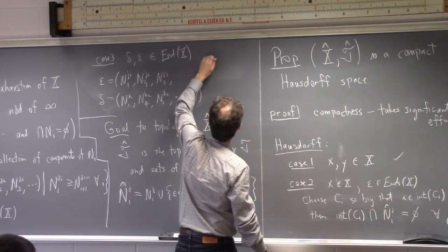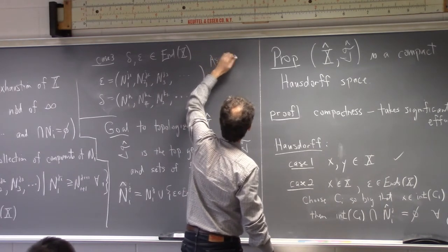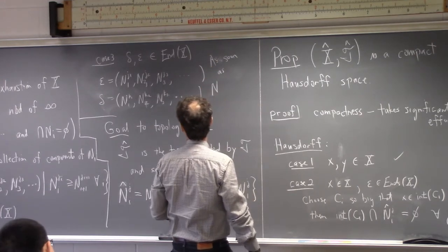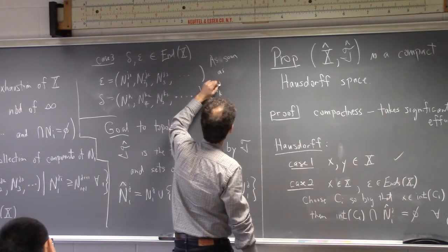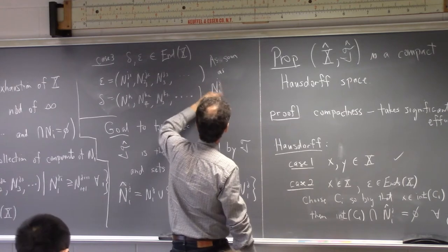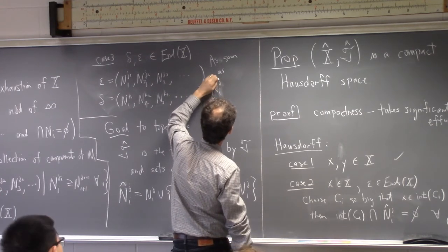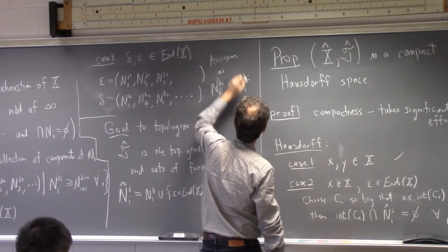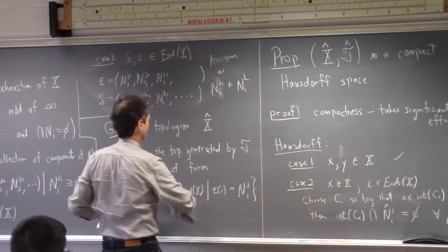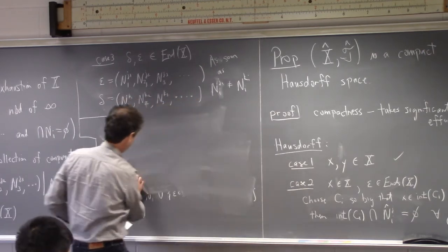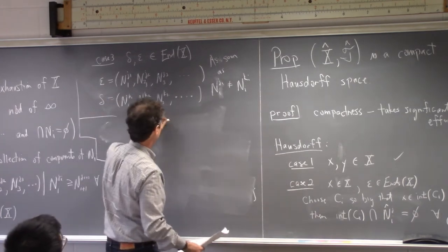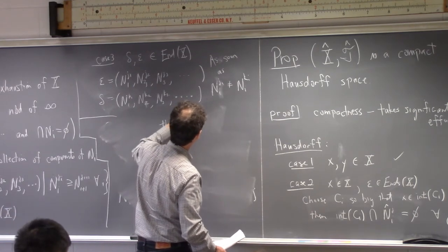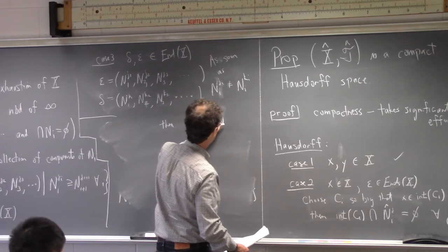As soon as N_{i,j_i} is not equal to N_{i,k_i} — as soon as that happens — putting hats on each of those components gives us our disjoint neighborhoods. So the compactification X-hat is Hausdorff.